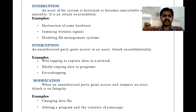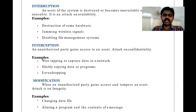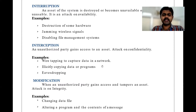So the first is interruption, and the second is interception. The third is modification. When an unauthorized party gains access and tampers an asset — modification is similar to interception, but that person also tampers the asset, meaning they change, delete, or modify the data. The attack here is on integrity. In interruption, the attack is on availability; in interception, on confidentiality; and in modification, on integrity.